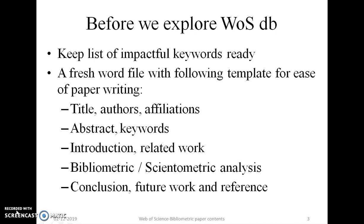Before we explore the Web of Science database in detail, I request you to keep a list of impactful keywords ready from your research domain and have a fresh Word file ready with the following template. The general template of an English bibliometric paper includes: title, authors, affiliations, abstract and keywords, introduction and related work, followed by bibliometric or scientometric analysis, conclusion, future work, and references.